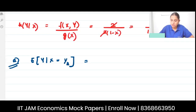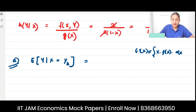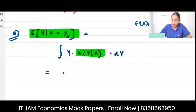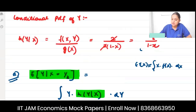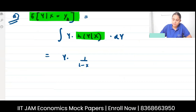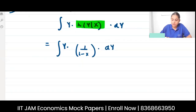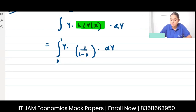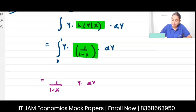The expected value formula is E[X] = integral of x·f(x) dx. So the conditional expectation E[Y|X] equals the integral of y times h(y|x) dy. Since h(y|x) = 1/(1 - x), and this is a constant with respect to y, it comes out of the integral: E[Y|X] = 1/(1 - x) times the integral of y dy from x to 1.